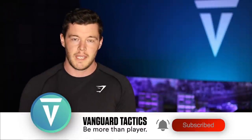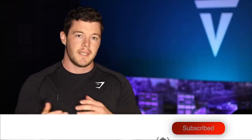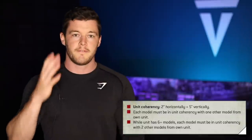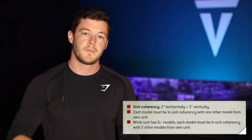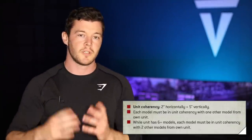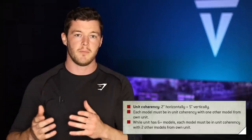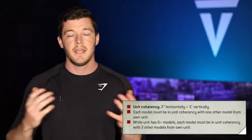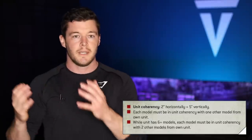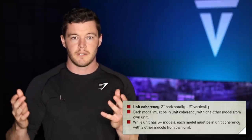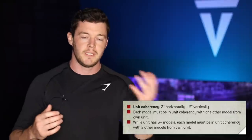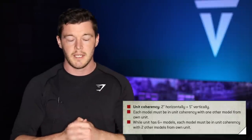In terms of unit coherency, the new ruling stipulates that if you have a unit of five or fewer models, then as long as each of those models are within two inches of another friendly model and five inches vertically, they are deemed to be in unit coherency. You have to start the game in unit coherency when you deploy them, and when you move you also need to stay in unit coherency.